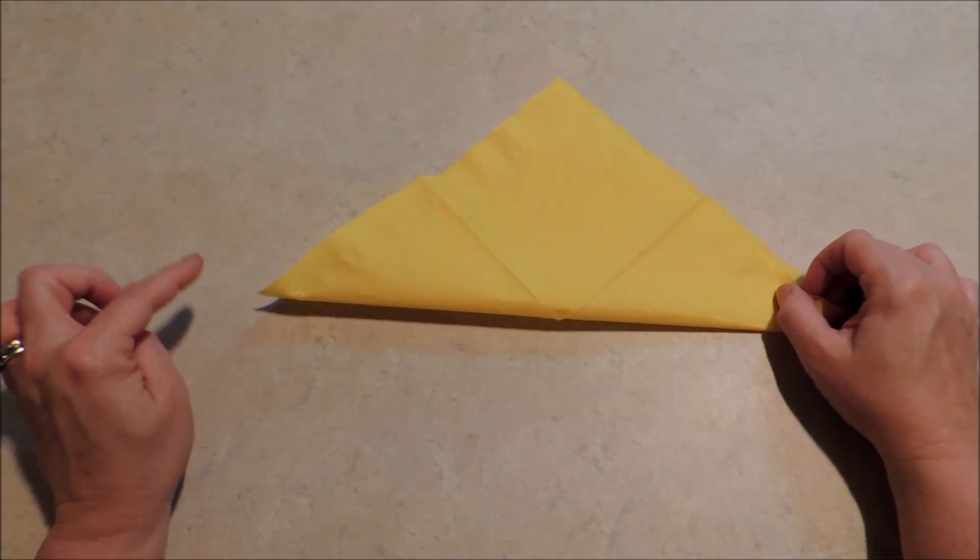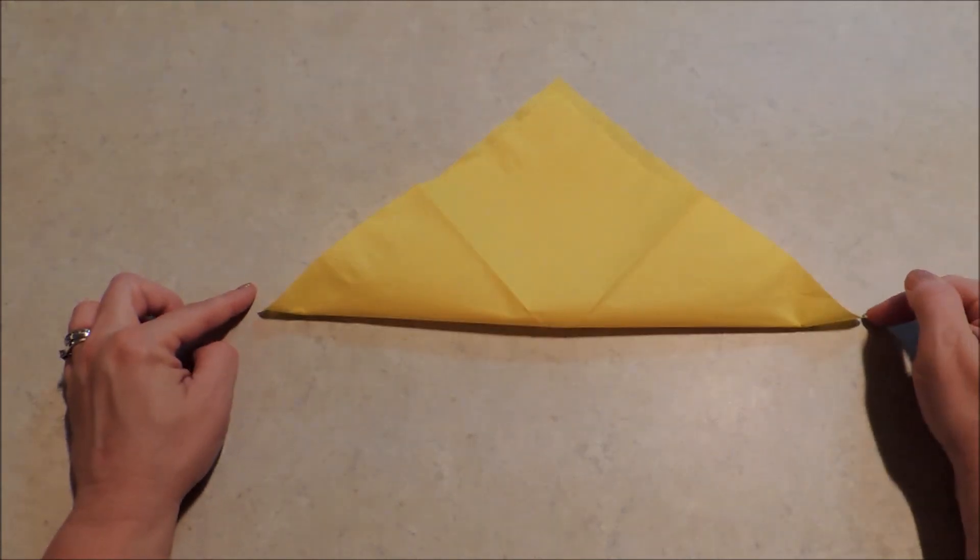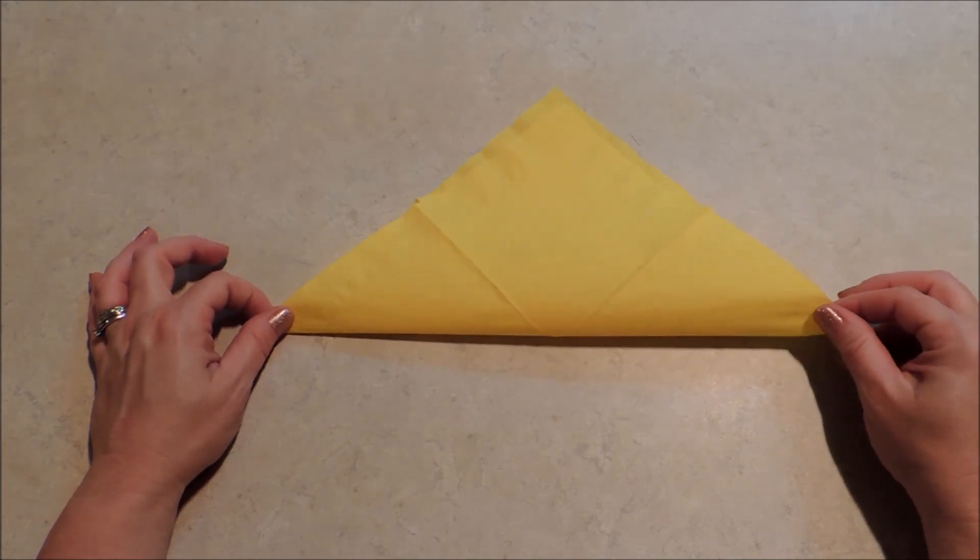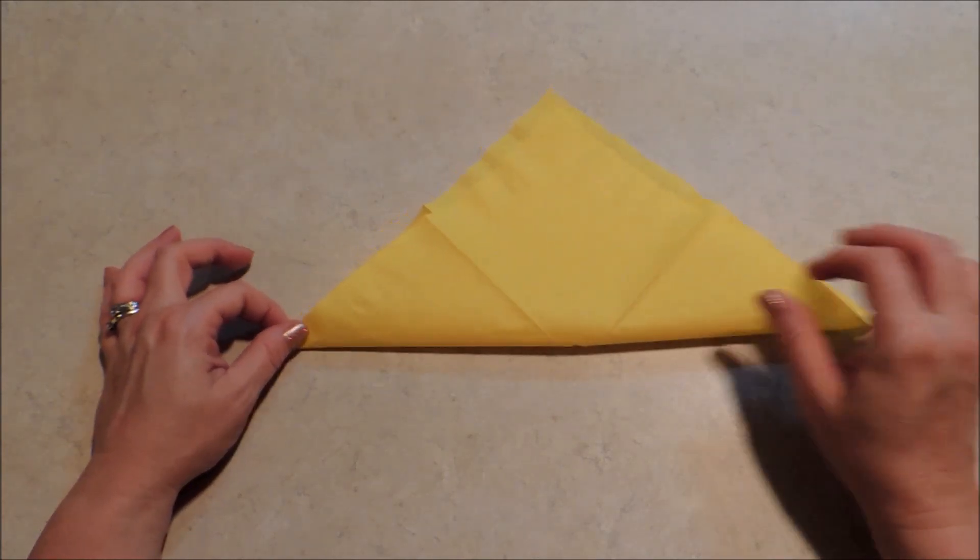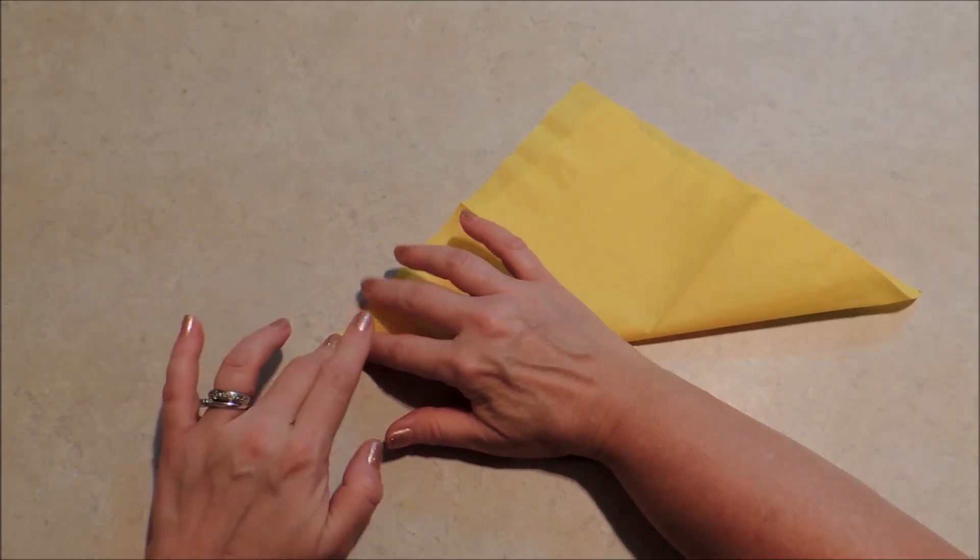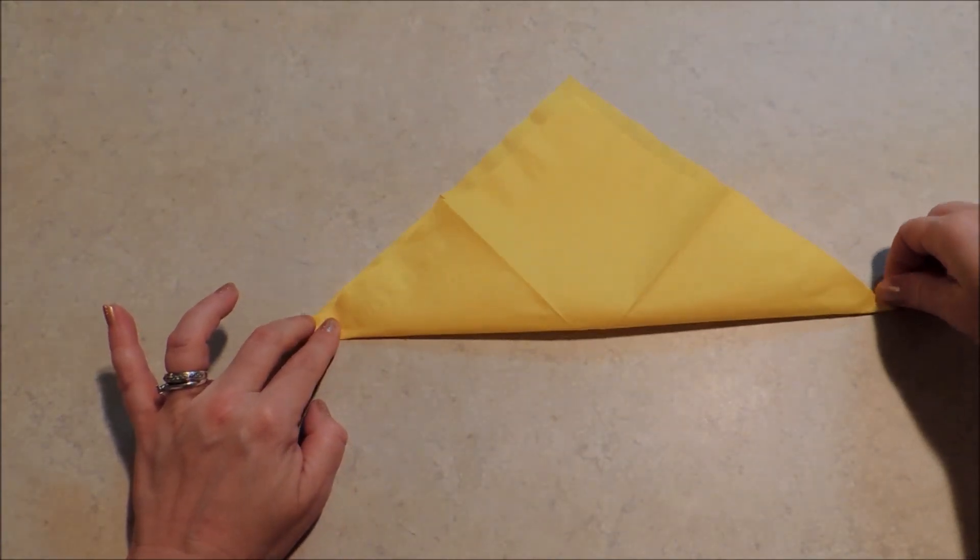And now when you do this, you want to focus more on these corners than this one here. Most of the time, the napkin is not perfectly square, so it won't line up just right everywhere. What you want to do is make sure that you get that point and that point.